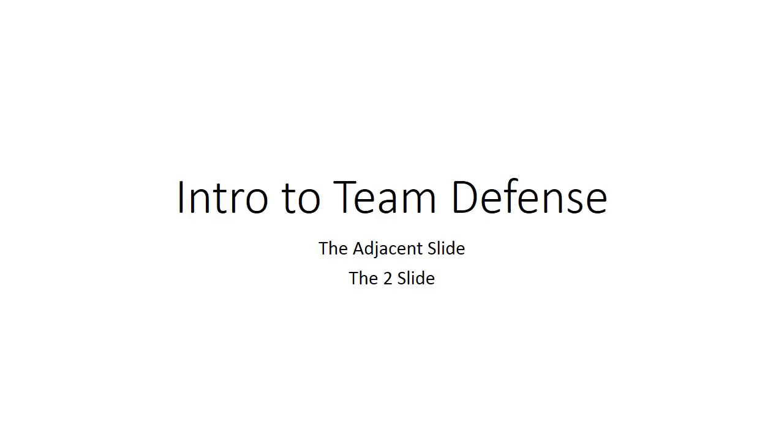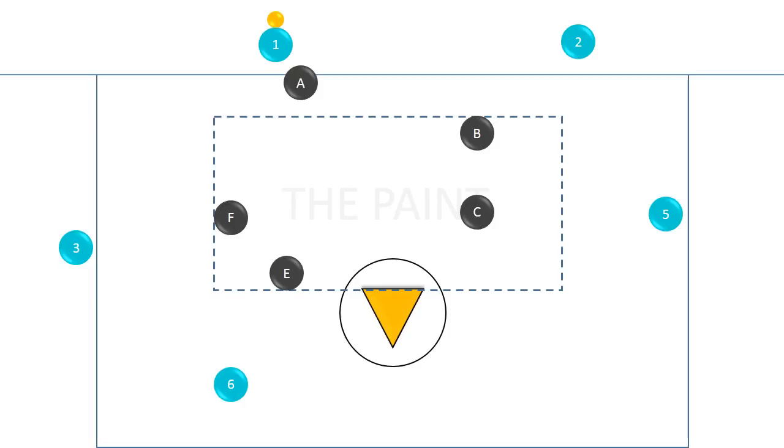So again, second slide. We have the ball carrier number one, guarded by Defender A, and we have B on the right side, F on the left side, and now we have player C and E. There are the potential two slides.